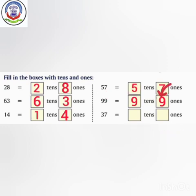Next is 37. We will write 1s here and 10s here. How many 10s do we have? We have 3 tens. How many 1s do we have? We have 7 ones. So here we have 3 tens and 7 ones.